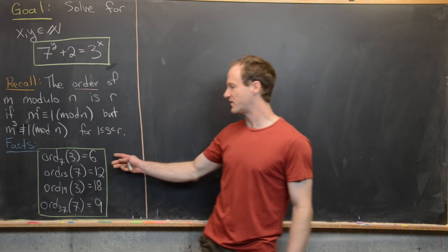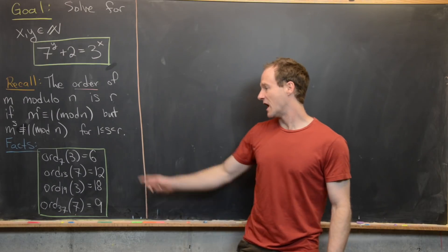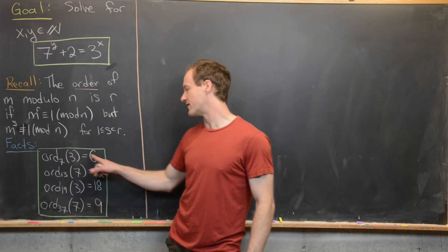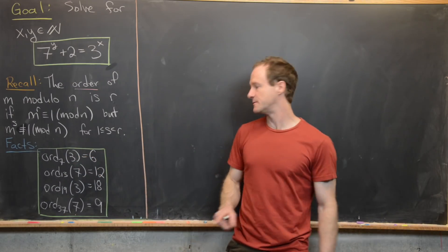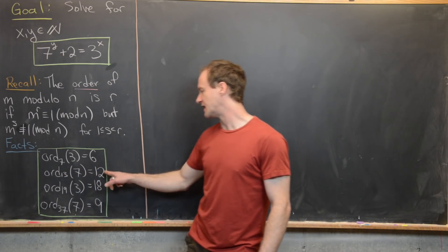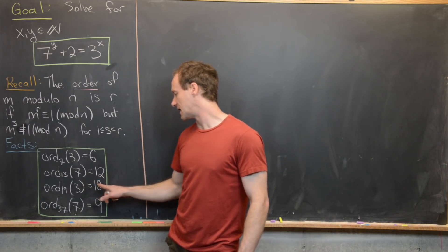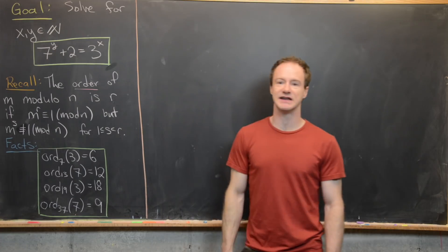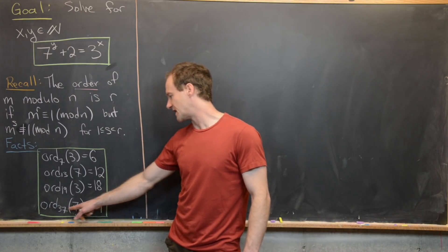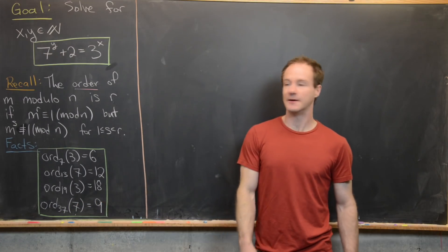Here are some facts we'll use. The order of 3 mod 7 is 6. The order of 7 mod 13 is 12. The order of 3 mod 19 is 18. And finally, the order of 7 mod 37 is 9.